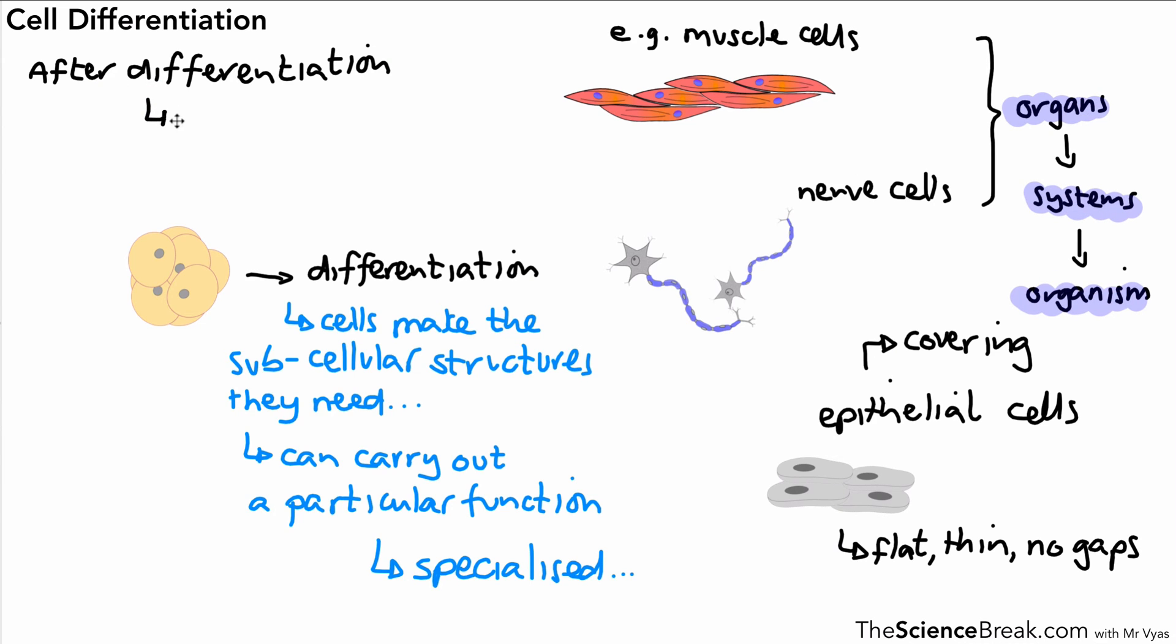It's important to appreciate that after differentiation, the cells can divide but they can't divide into any other type of cell. Cell division from then on is only for repair and reproduction and possibly to make more of the same type of cells, for example during growth. Muscle cells cannot become nerve cells. Epithelial cells cannot become muscle cells.